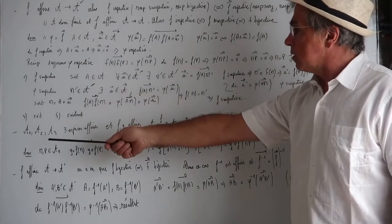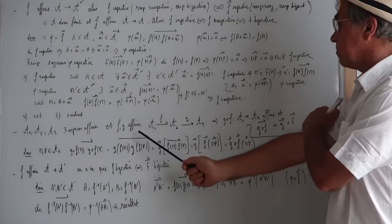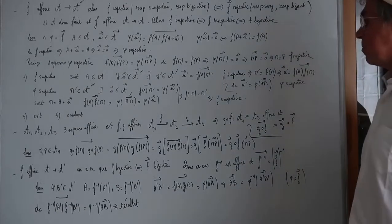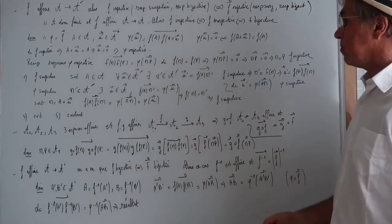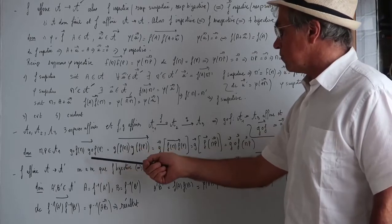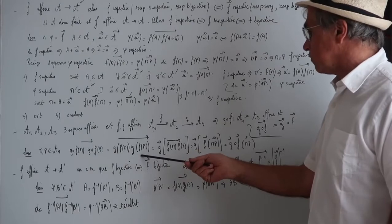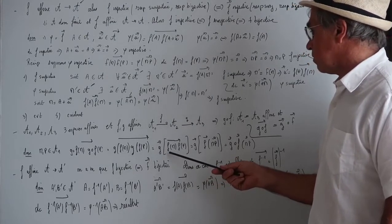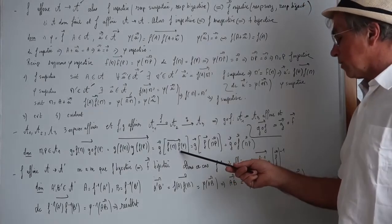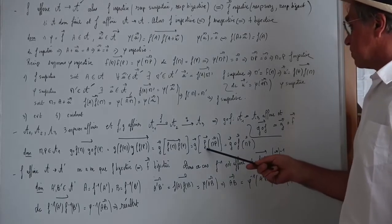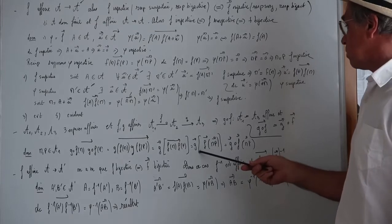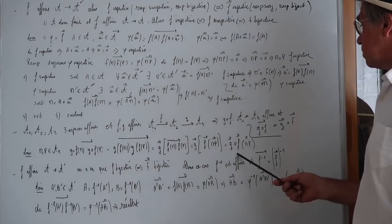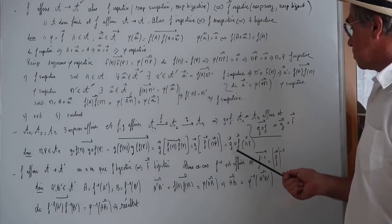Propriété suivante : la composition. On a trois espaces affines et deux applications affines, une de A1 vers A2 et l'autre de A2 vers A3. Alors G∘F est affine et sa partie linéaire s'obtient en composant les parties linéaires. Démonstration : je prends deux points M et P de A1. Le vecteur G∘F(M), G∘F(P) = vecteur G(F(M)), G(F(P)). En utilisant que G est affine, ça fait la partie linéaire de G appliquée au vecteur F(M)F(P). En utilisant que F est affine, c'est la partie linéaire de F appliquée au vecteur MP. Donc on obtient (partie linéaire de G ∘ partie linéaire de F)(MP), ce qui démontre que G∘F est affine.